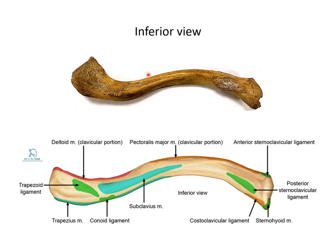Now moving to the clinical aspect. The commonest fracture of the clavicle occurs at the junction of the medial two-third and the lateral one-third. This happens with a fall on an outstretched hand or any forceful injury, which more commonly causes fracture at the clavicle at this point.